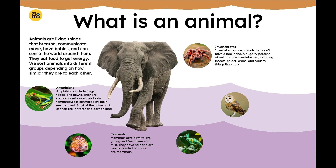Amphibians. Amphibians include frogs, toads, and newts. They are cold-blooded, since their body temperature is controlled by their environment. Most of them live part of their life in water and part on land.